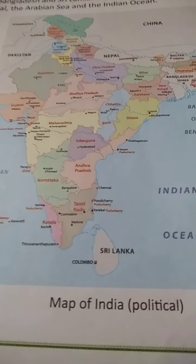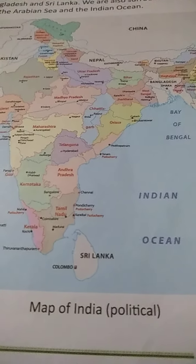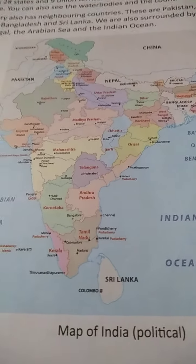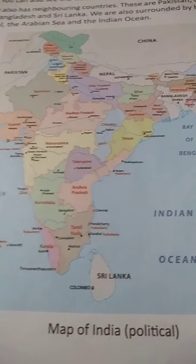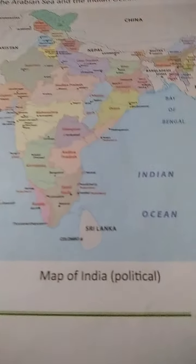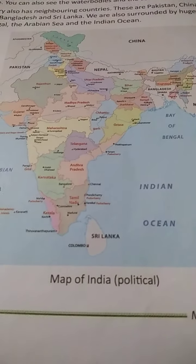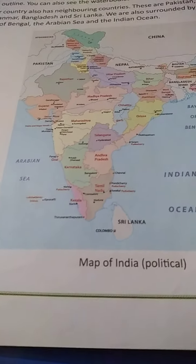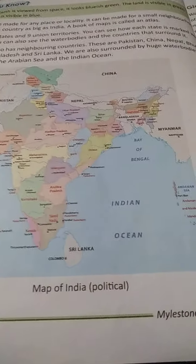India's neighboring countries are Pakistan, China, Nepal, Bhutan, Myanmar, Bangladesh, and Sri Lanka. We are also surrounded by huge water bodies like the Bay of Bengal, the Arabian Sea, and the Indian Ocean.